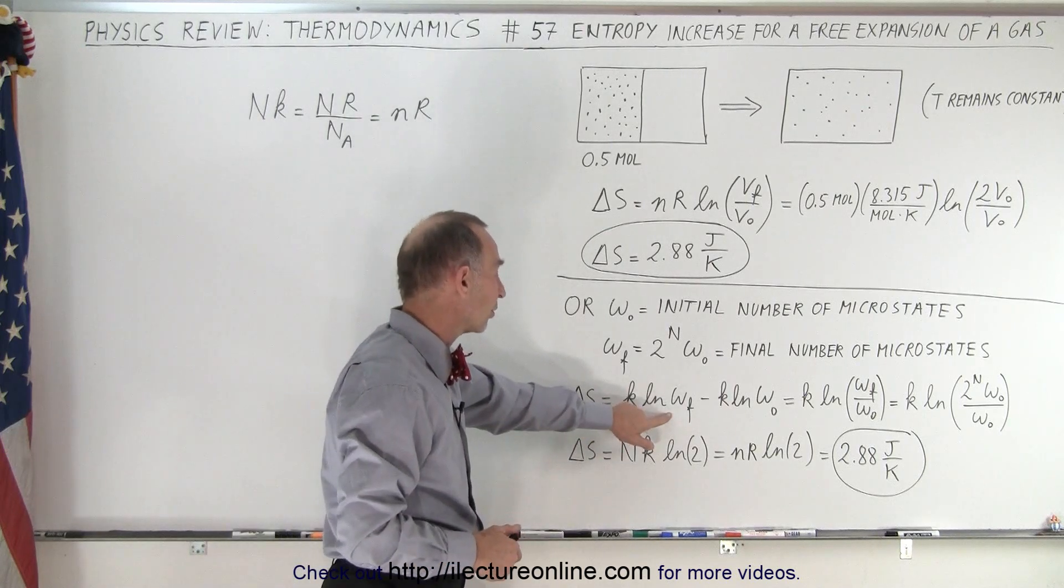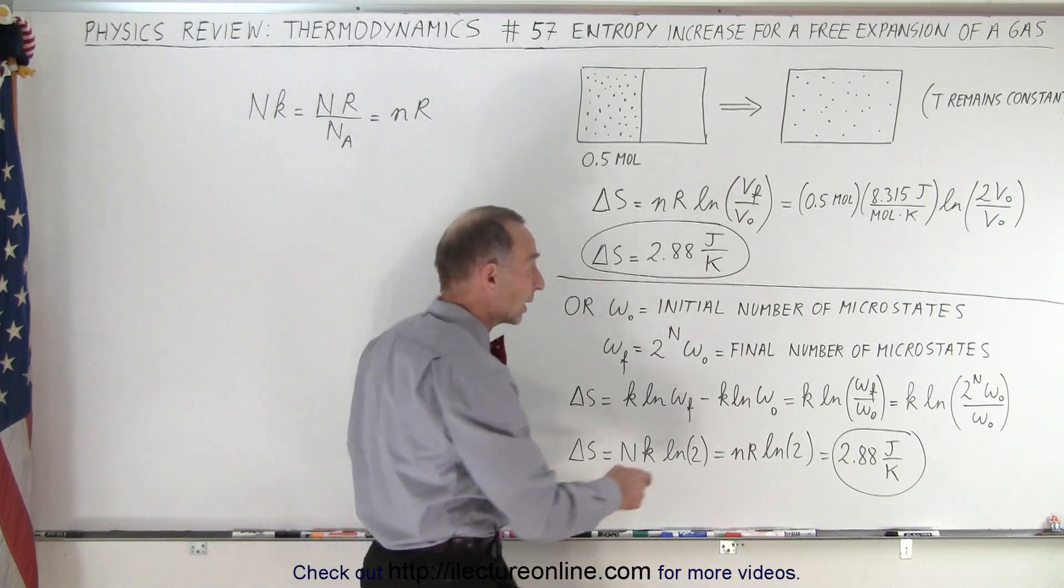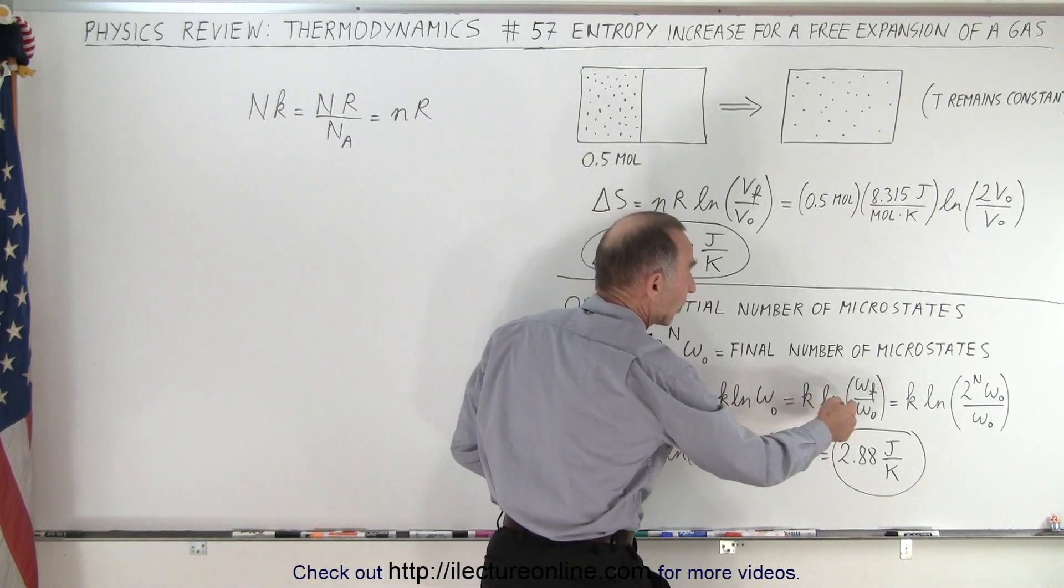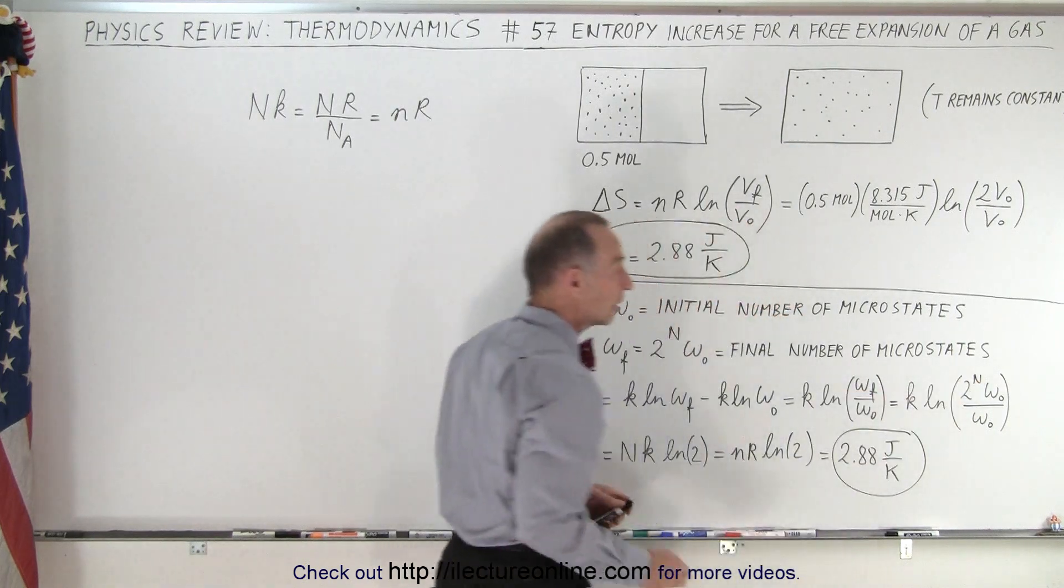Of course we know that the natural log of A minus the natural log of B is simply the natural log of A over B so we can rewrite it like this. And then instead of writing omega final we simply write 2 to the n power times omega initial.